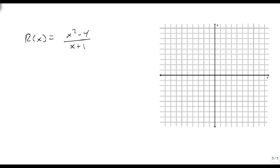We also have this example: x squared minus 4 over x plus 1. This time, x squared minus 4 equals 0, so x squared equals 4, and x equals plus or minus 2. So we get zeros at 2 and minus 2.